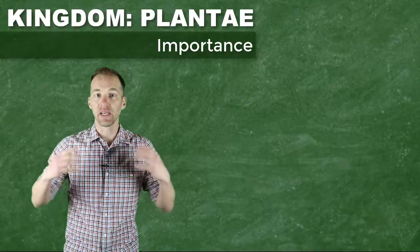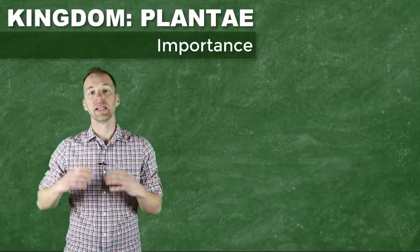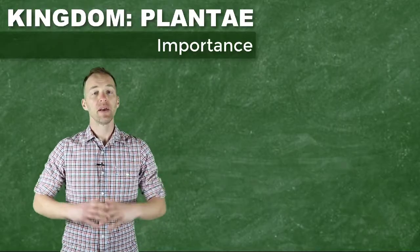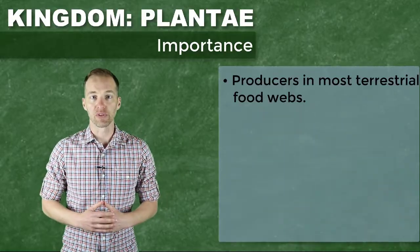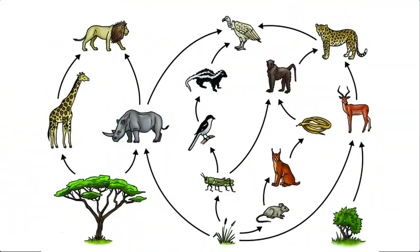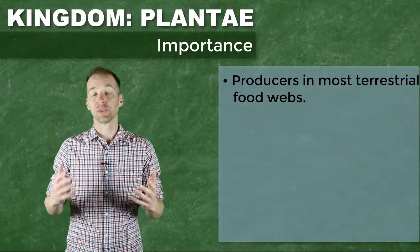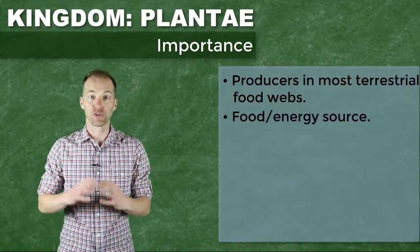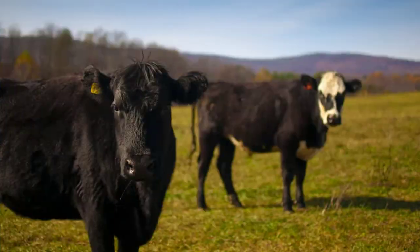These glucose units are formed from the sun's energy through the process of photosynthesis. Being autotrophic — being able to take an inorganic source of energy and convert it into a usable form — makes plants extremely important as producers, especially in terrestrial food webs.